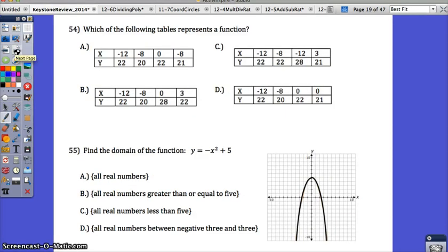Okay, 54, which of the following tables represents a function? Well, again, same thing. What is the definition of a function? Each x is paired to exactly one y. You may want to write that down. So look for your x values and see if any of them repeat. We want to know which is a function. So they should all have unique x's. Negative 12 is paired to 22, negative 8 is paired to 20, 0 is paired to 22. Uh-oh, negative 8 is also paired to 21. So negative 8 is not paired to exactly one y value. This is not a function.